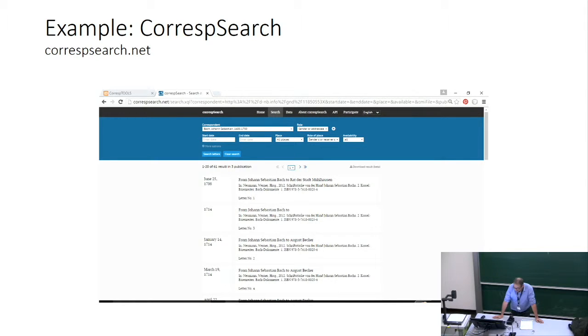There is this great web page, web service corr-search, that brings together a lot of correspondences that are on the internet in editions. And when you do queries there, you get a list, a wonderful, very helpful list. I don't want to criticize this work, I love this web page, of data.